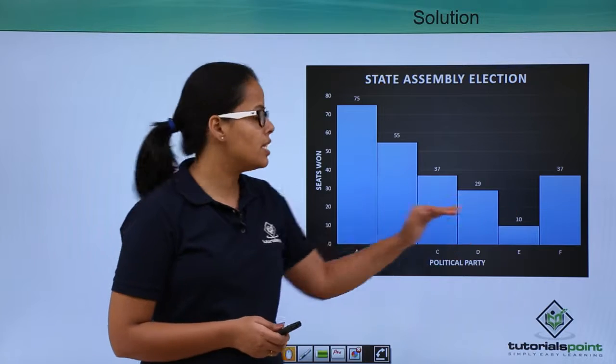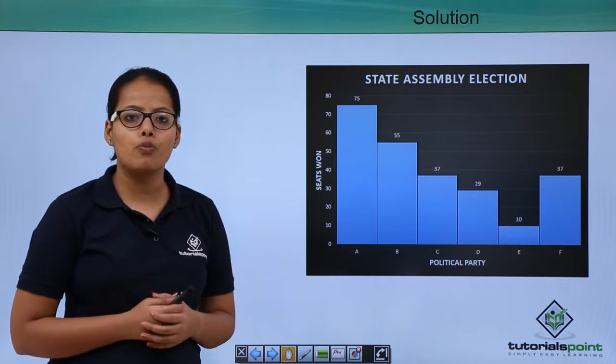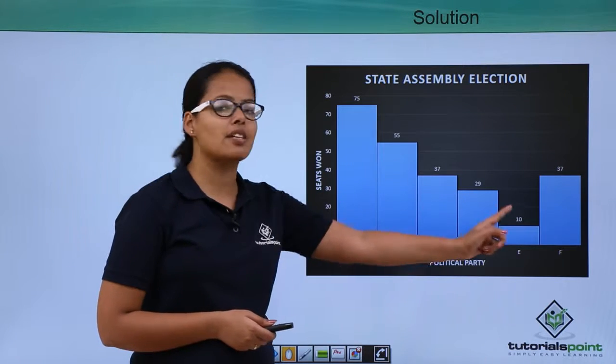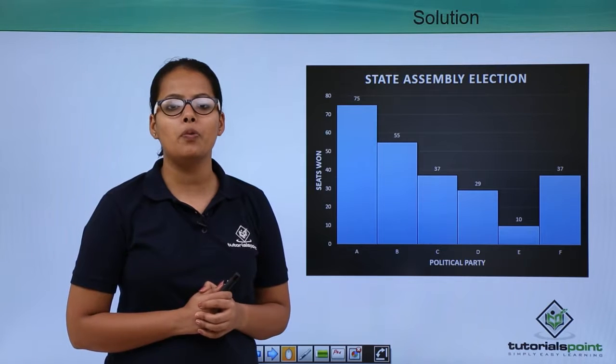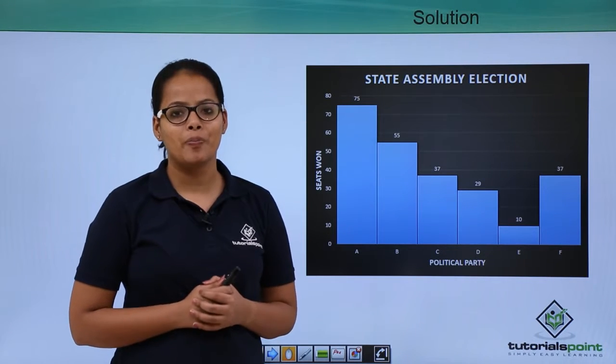In all these levels, you can see that the highest level is A. So, the maximum votes won by political party A because it is 75, which is the highest of all. I hope you understood this problem quite well. I will be taking more problems like this in the next video lecture. Thank you.